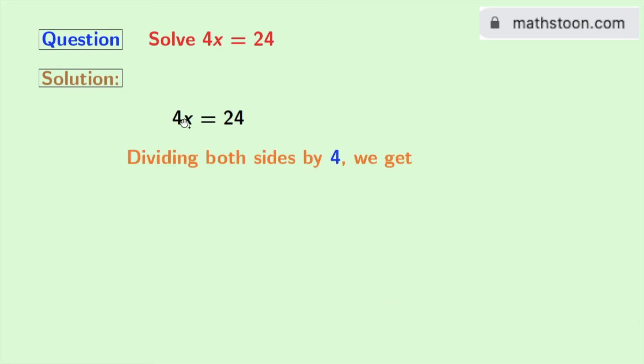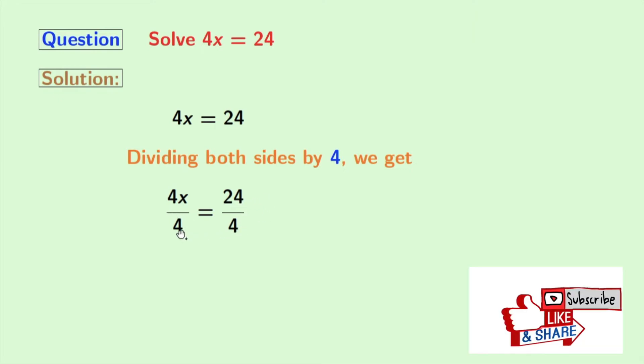Doing so we get 4x by 4 is equal to 24 by 4. Look that in the left hand side, 4 gets cancelled and we are left with x.